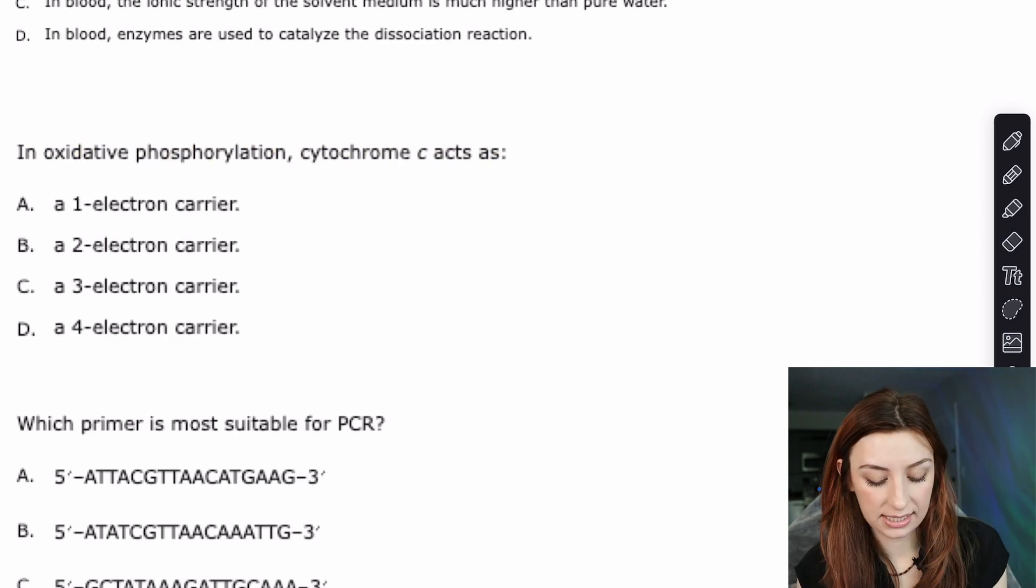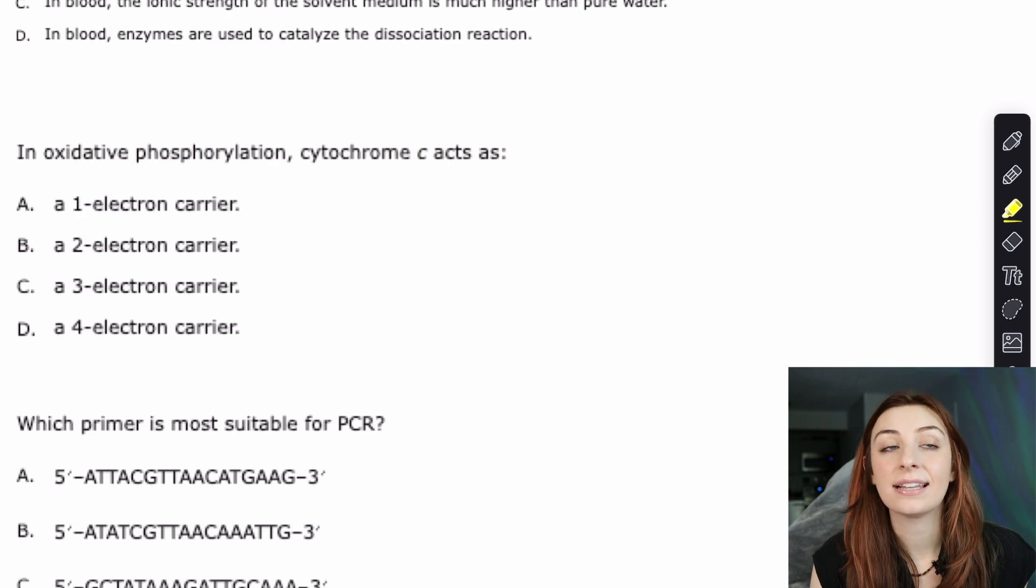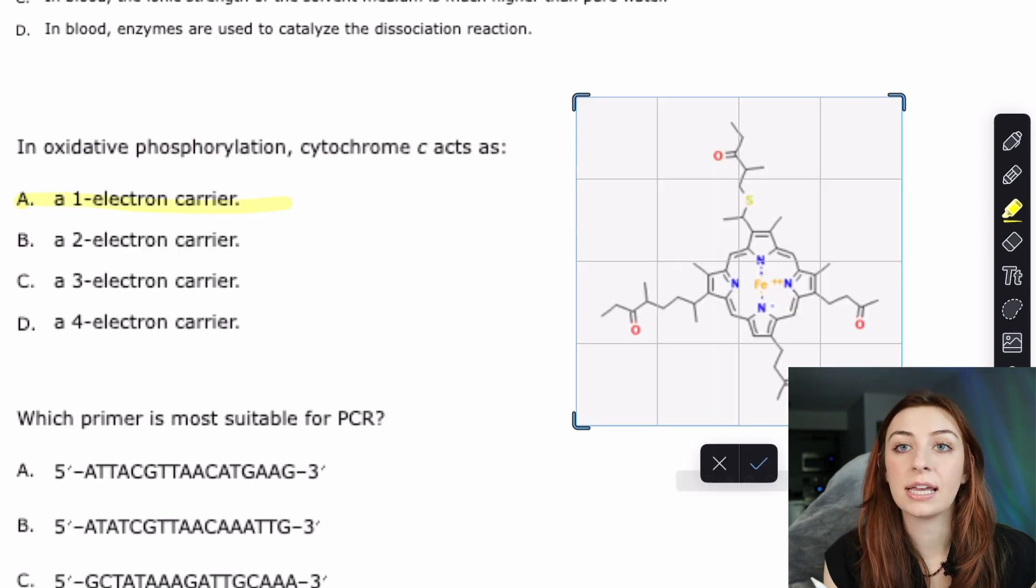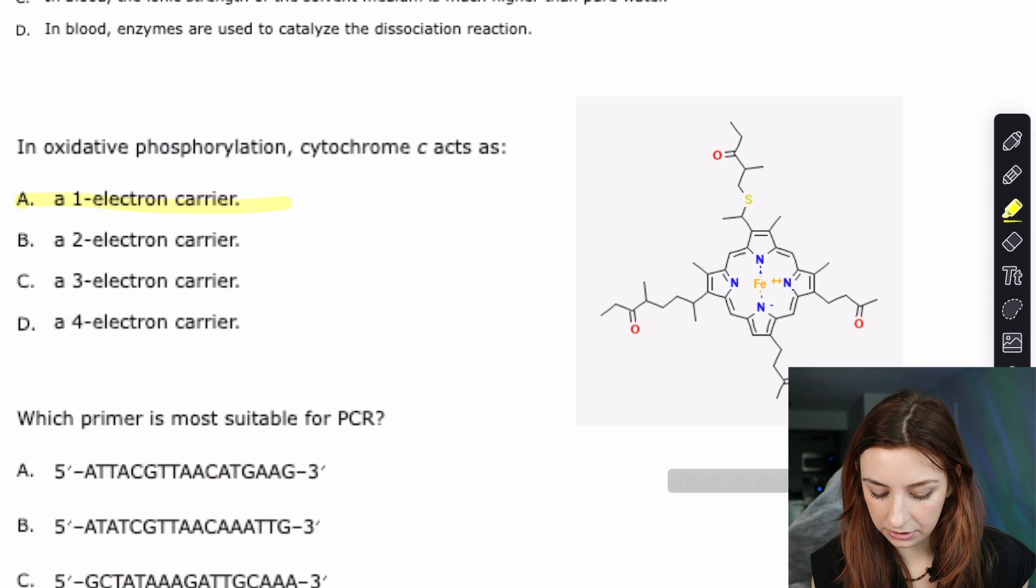The next question is question 16 and it says in oxidative phosphorylation cytochrome C acts as, and this is a memorization question unfortunately. You just I remember coming across this question and I didn't know it and I had to put it on a flash card and I probably never used that fact again. But you know what cytochrome C acts as a one electron carrier.